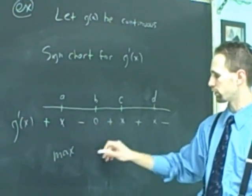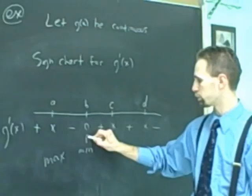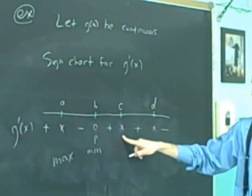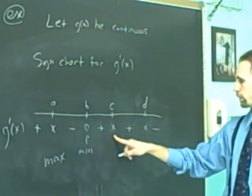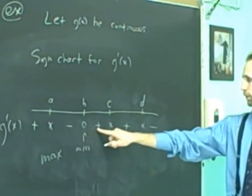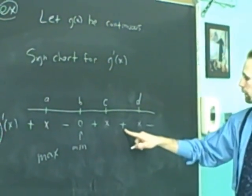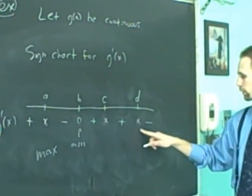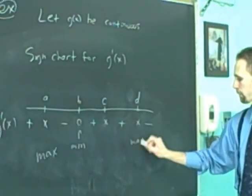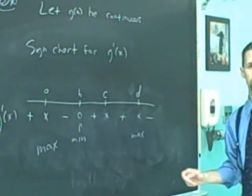We would have a min here because of sign change. Nothing's going on here. It's neither a max nor a min because there's no sign change. It stays positive, undefined and positive. And then here we have another relative maximum. That's all it goes to. It's really easy if you have a sign chart already mapped out.